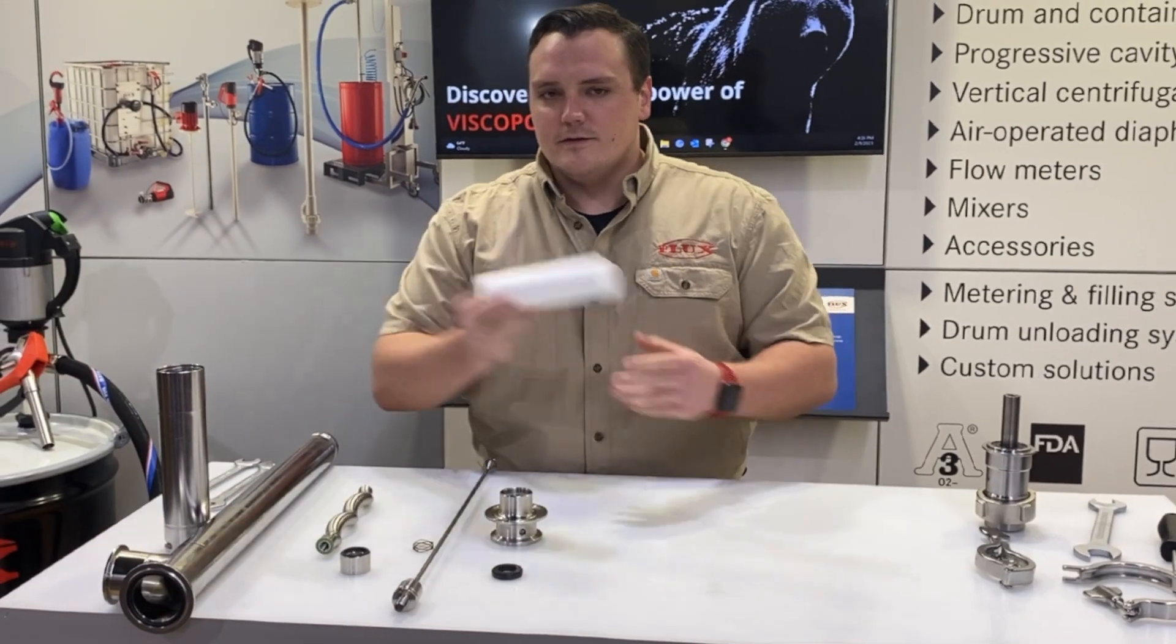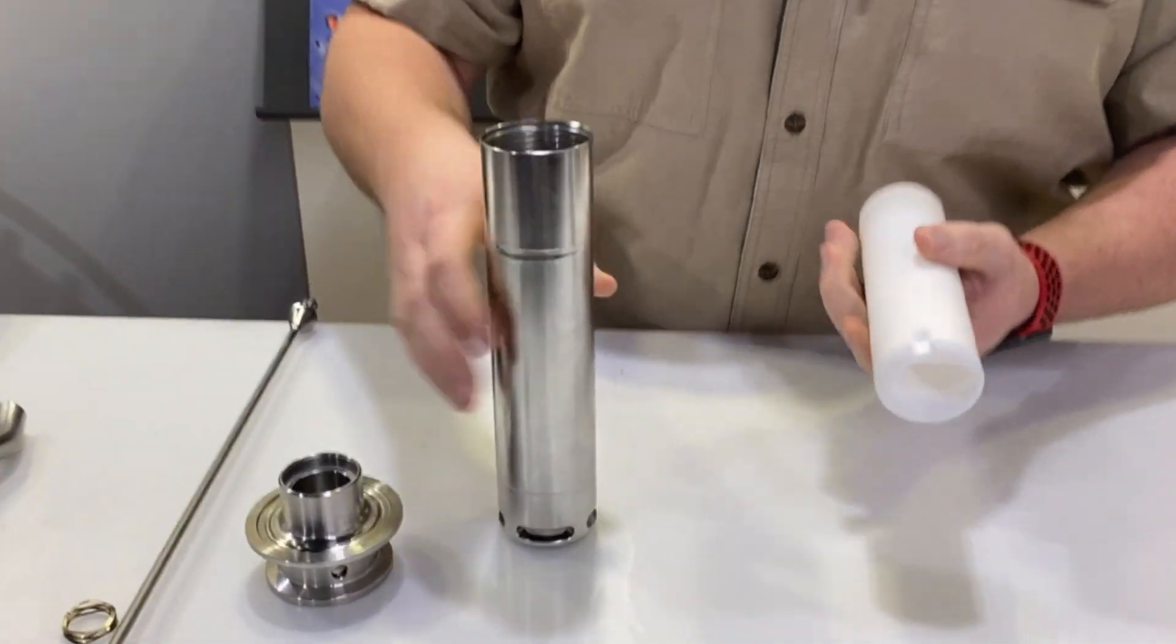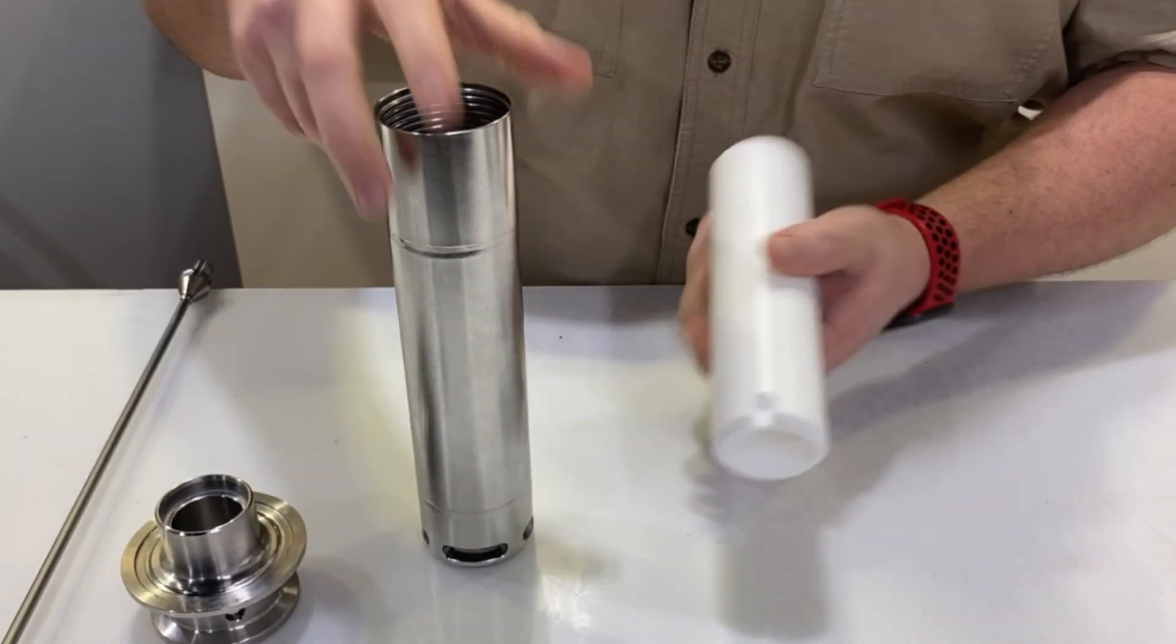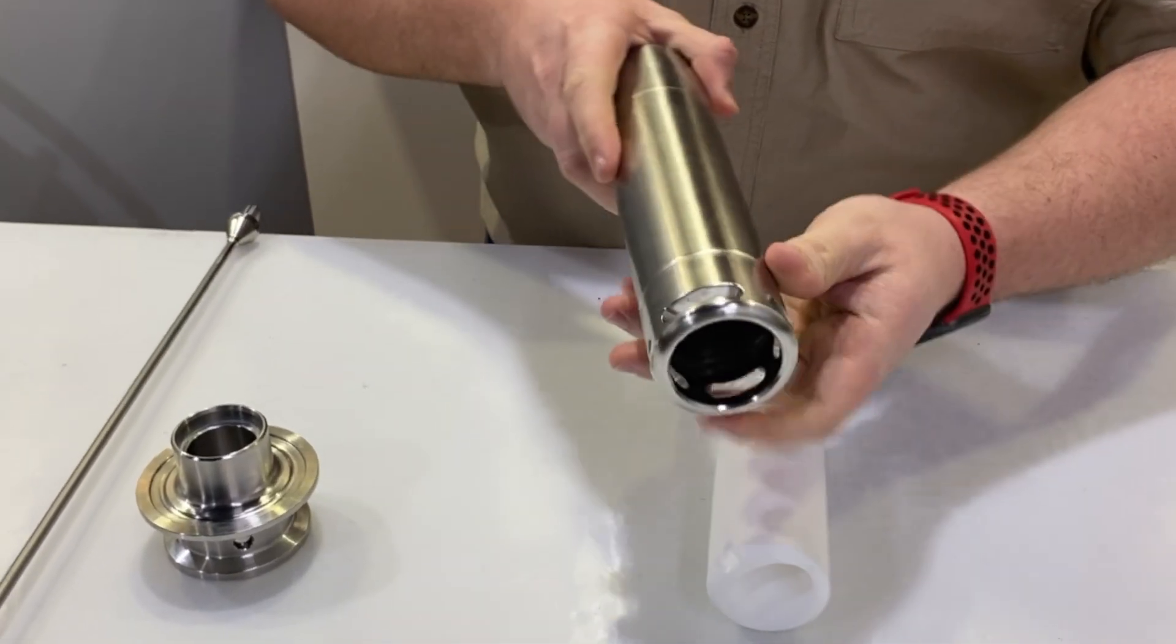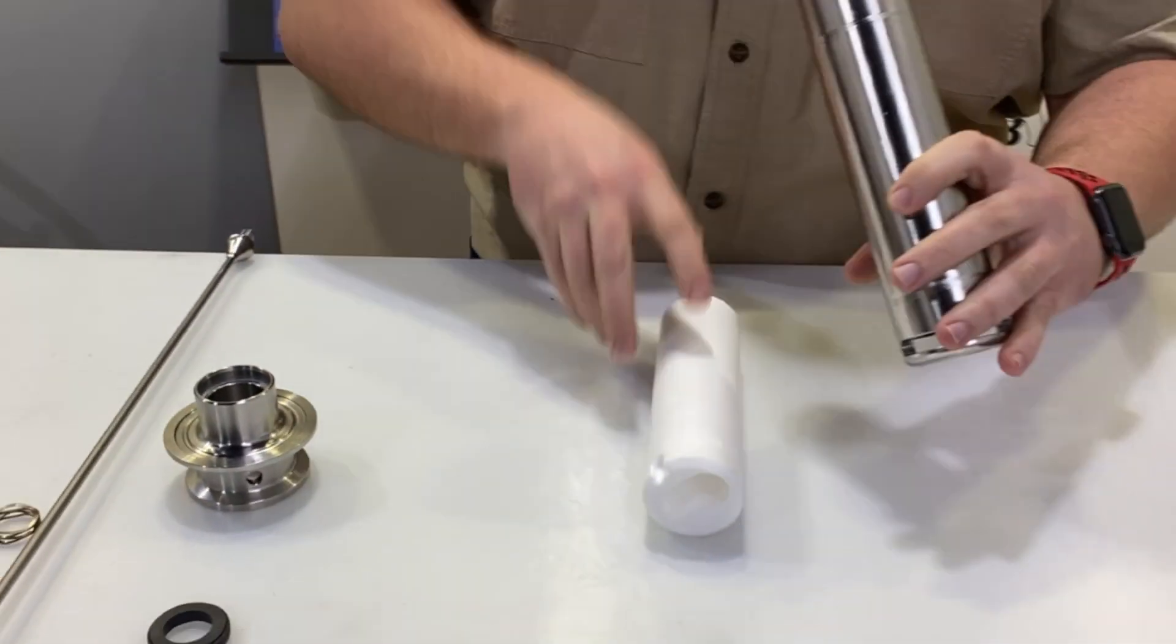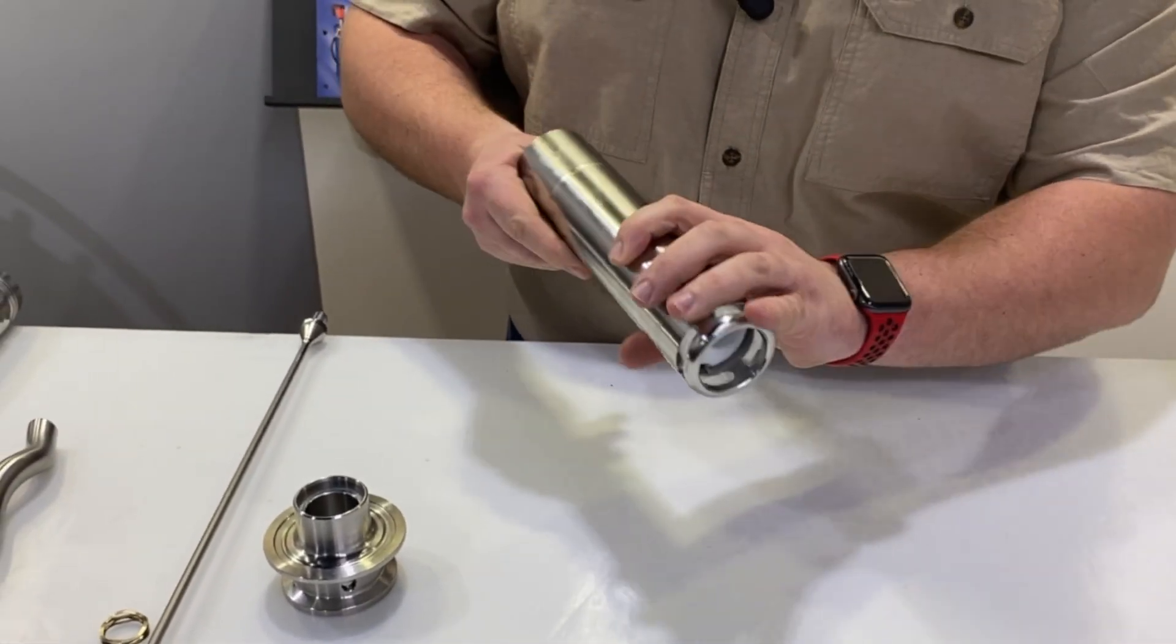Let's start by taking your Teflon stator and your stator housing. You'll see similar to the seal this has a notch and the stator housing has an alignment pin here at the bottom. Just need to make sure that those two mate up so that it's sitting in the housing properly.